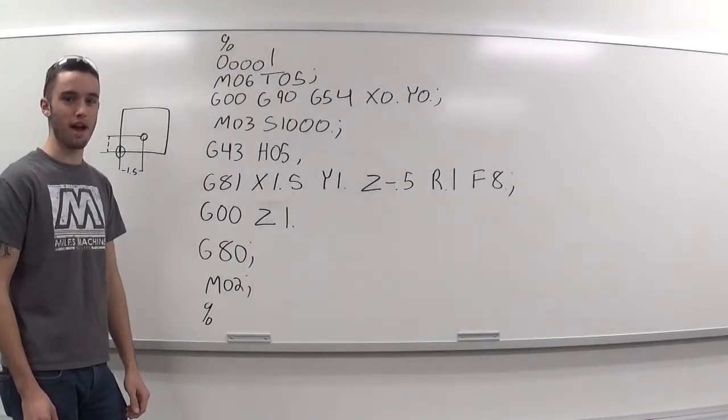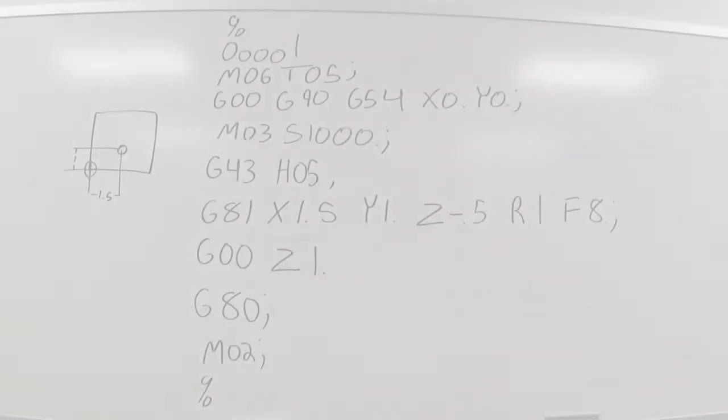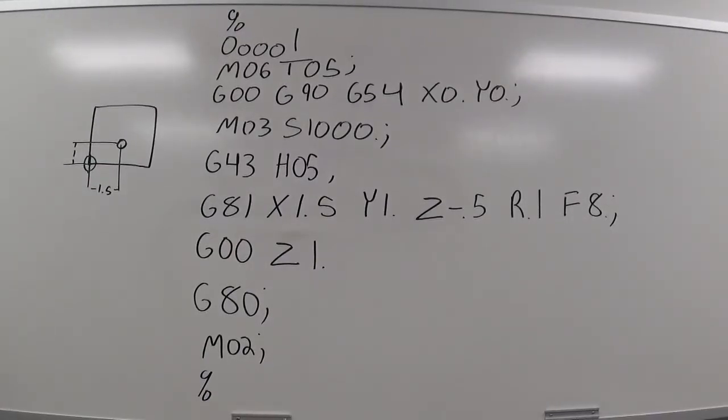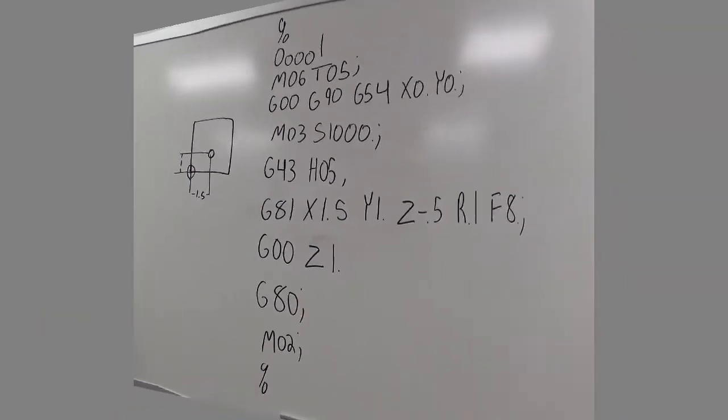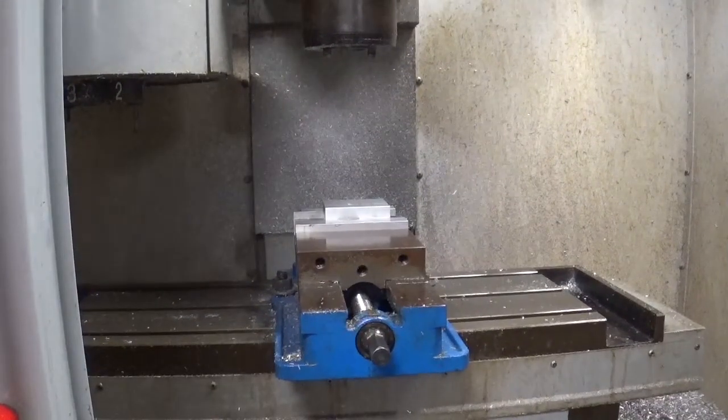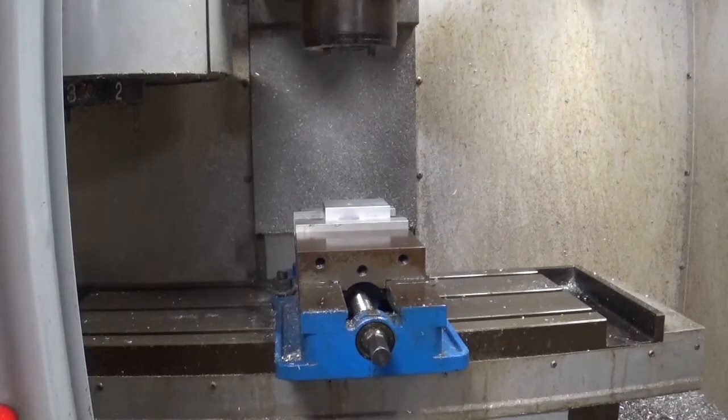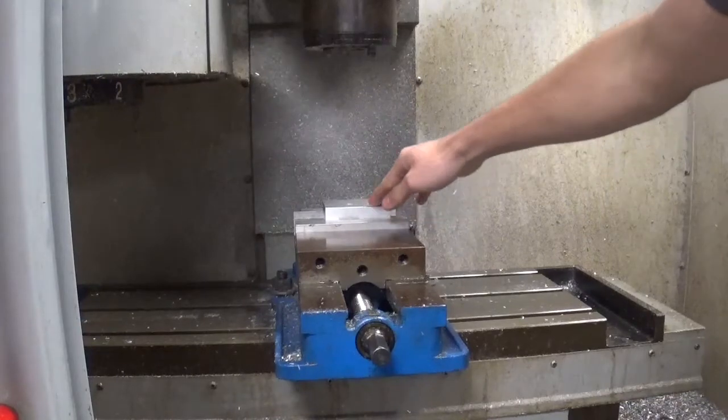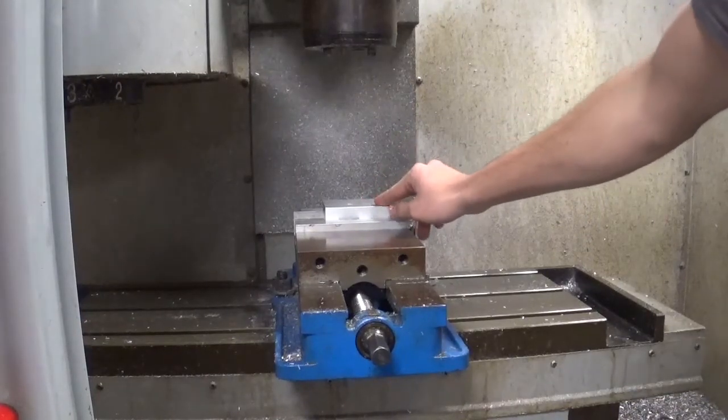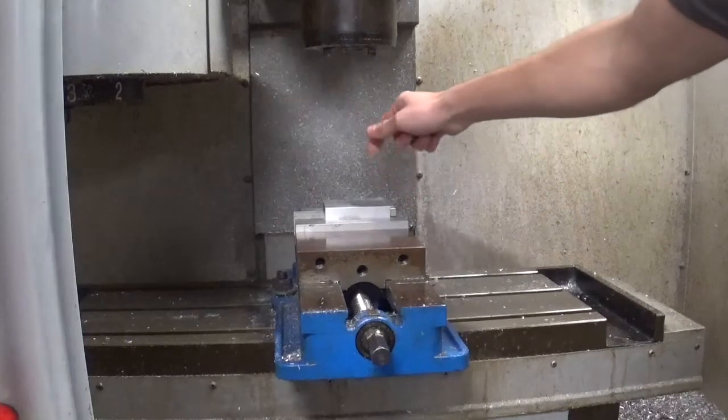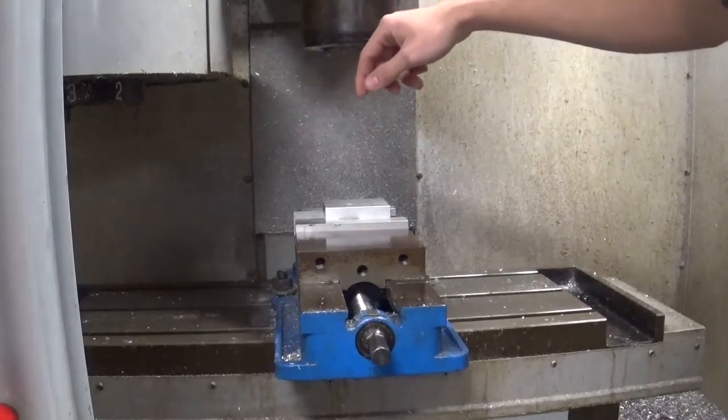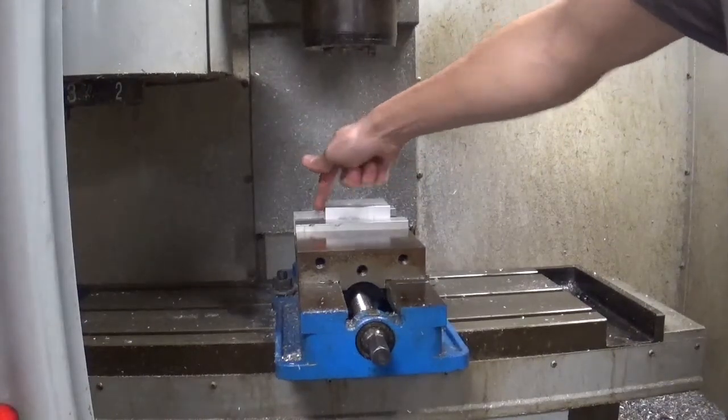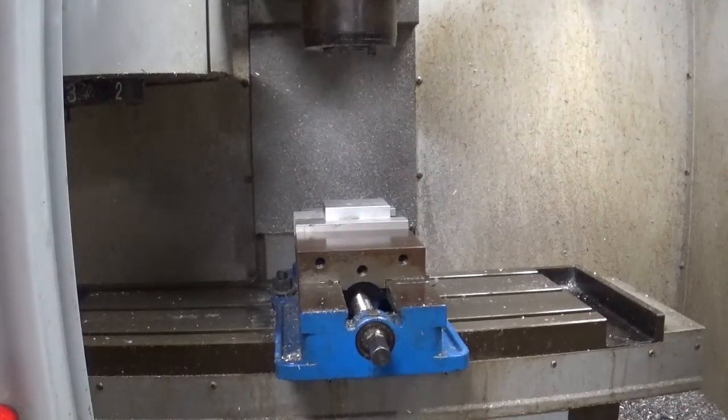Alright, let's go out to the shop and make some chips. Alright, so we're out here on a Haas CNC mill. We're going to be drilling down into this piece of aluminum. Z0 is the top of the part. I made the G54 work offset right here in the corner. So I did my Y off of this and my X off of this. Let's watch it run.